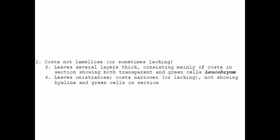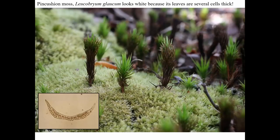Another peculiar moss is leucobryum, which means white moss. Leucobryum, sometimes called pincushion moss, has a peculiar ghostly whitish appearance because, unlike most mosses, the leaves are more than one cell thick — several layers. The inner layer is green and photosynthetic, and the outer two or three layers on either side are hollow and clear, giving it a whitish look. In this picture, the base is leucobryum; the upright ones are a type of hair cap moss called polytrichum.